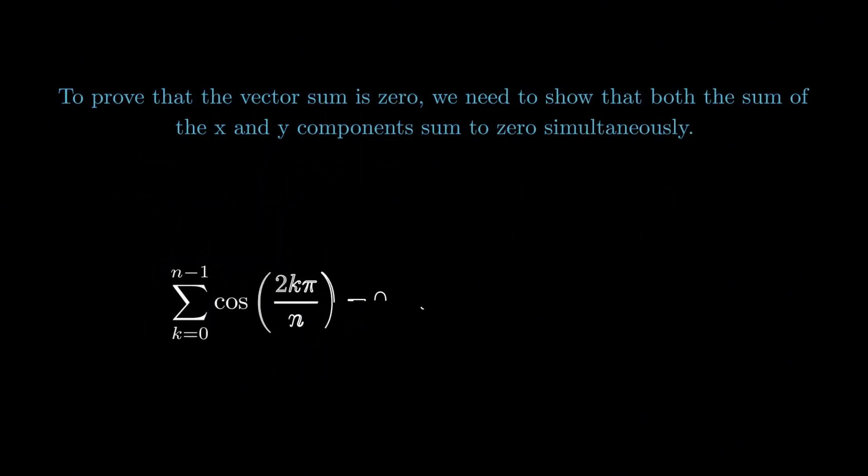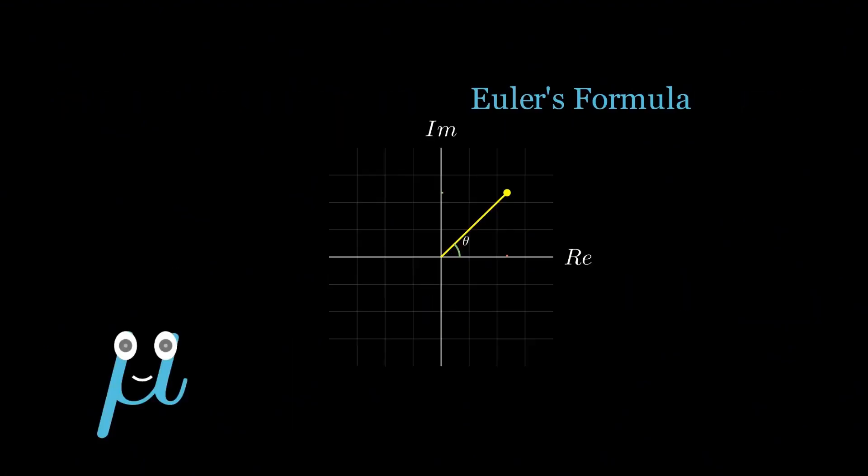To show that the total vector sum is zero, we must prove that both the x and y components are zero simultaneously. There might be ways to approach this using trigonometry - I haven't found one myself. If anyone has a clever trick, feel free to drop it in the comments below. But here is a far more elegant way to prove it using Euler's formula.